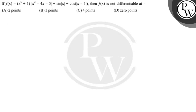Hello Bacho, let's read the question. If f(x) is equal to (x⁵ + 1) times |x² - 4x - 5| plus sin|x| plus cos|x| - 1, then the function f(x) is not differentiable at: option A) 2 points, option B) 3 points, option C) 4 points, or option D) 0 points.